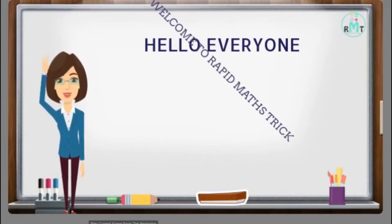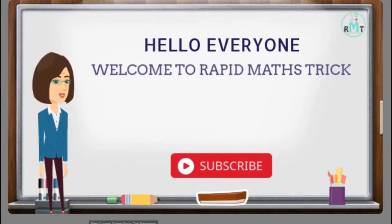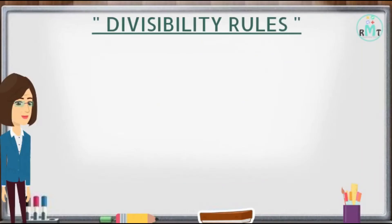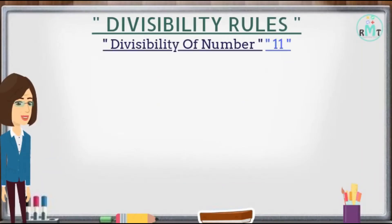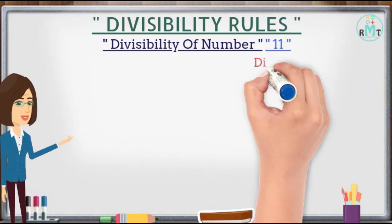Hello everyone, welcome to Rapid Math Tricks. In this video we are going to learn divisibility rules from 11 to 20. First we will check the divisibility rule of number 11: any number is divisible by 11 if the difference between the sum of digits at odd places and even places is divisible by 11 or 0.